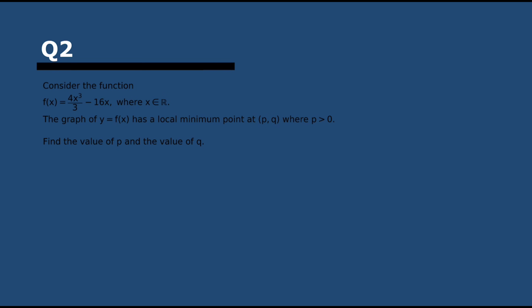Next question. We have a function and they're asking for the local minimum. Whenever that's the case and it's not a quadratic — with a quadratic it's easier — but if it's not, we basically do the derivative. So the derivative in this case is 4x squared, because the 3 in the exponent becomes a multiplier and divides over the 3, and then minus 16, because the x is lost.